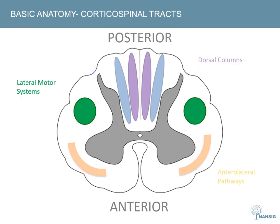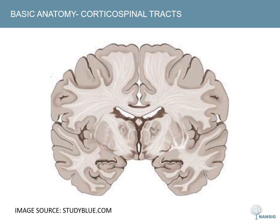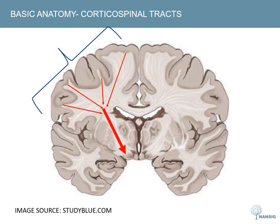We'll now move on to the anatomy of the corticospinal tracts, which are part of the lateral motor systems and are involved in the control of voluntary fine movements. Approximately 50% of fibres in the corticospinal tract originate in the primary motor cortex on the precentral gyrus; others come from the supplementary motor area or premotor cortex. These diffusely spread fibres condense in the corona radiata to form the somatotopically arranged posterior limb of the internal capsule.